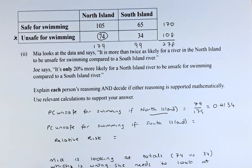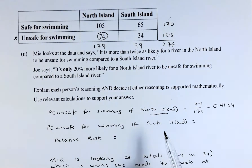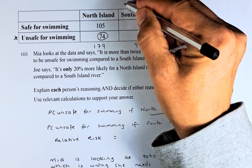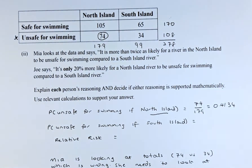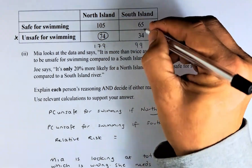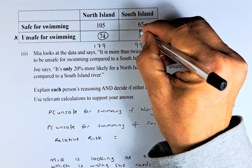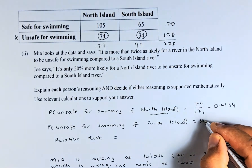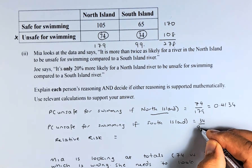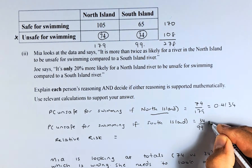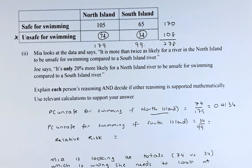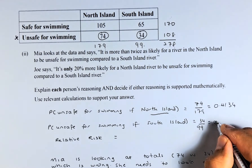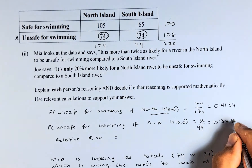Similarly, what is the probability that a river is unsafe for swimming if it is a South Island river? Unsafe for swimming in the South Island is 34 out of 99. Converting to decimal, that is 0.3434.